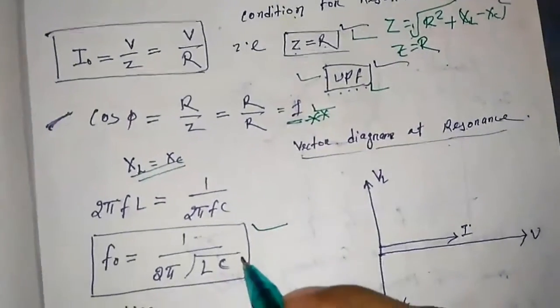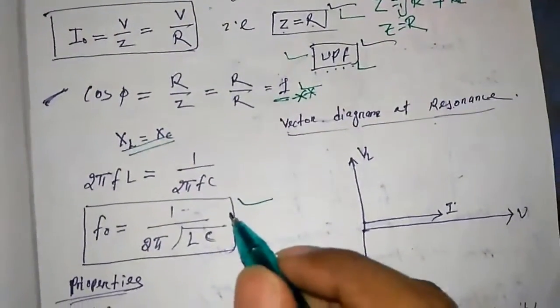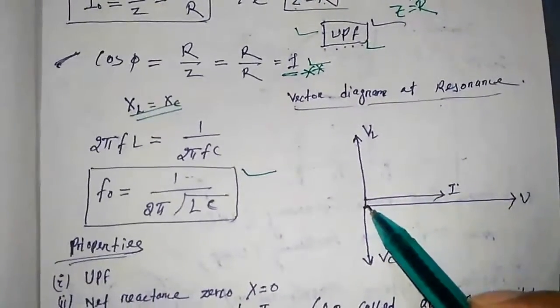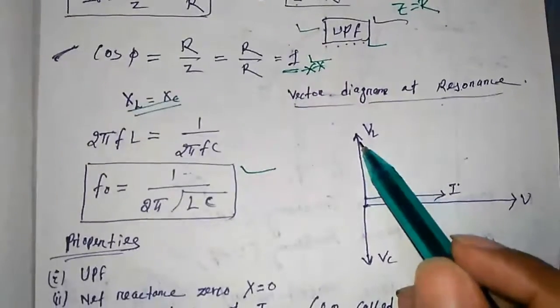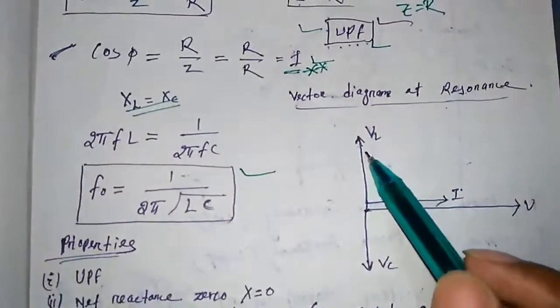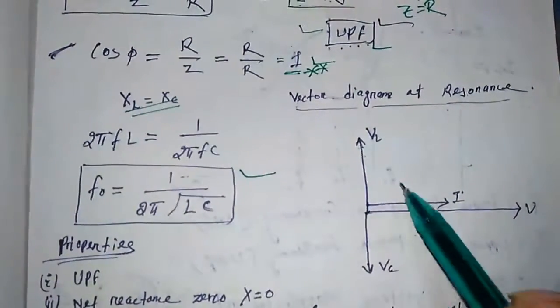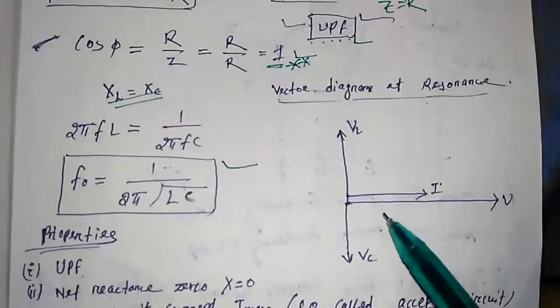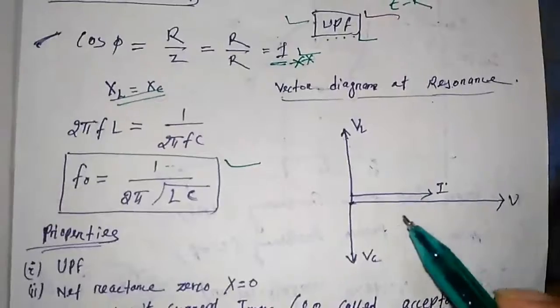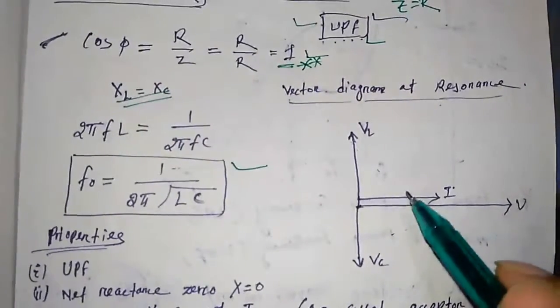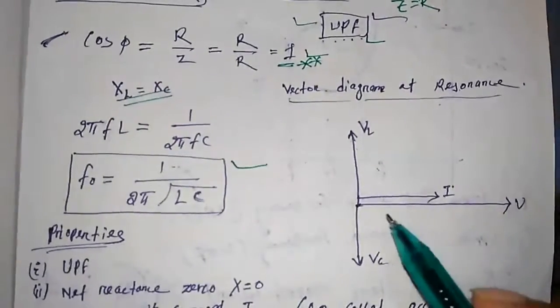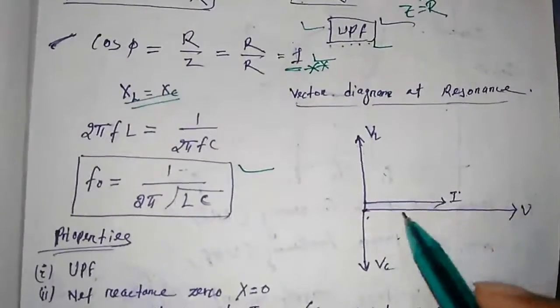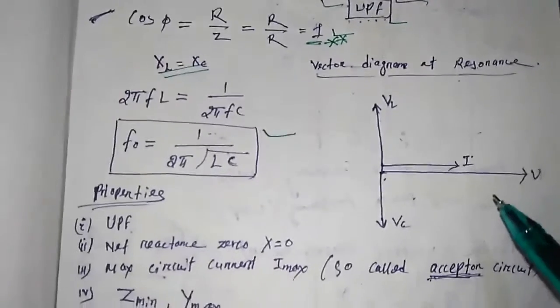So the vector diagram at resonance, as we know that the voltage of the inductor and the capacitor will be opposite to each other. Only the resistance voltage is present. And the current and the voltage will be in phase. That is of unity power factor. The current and voltage will be in phase.